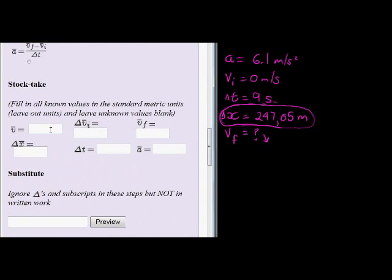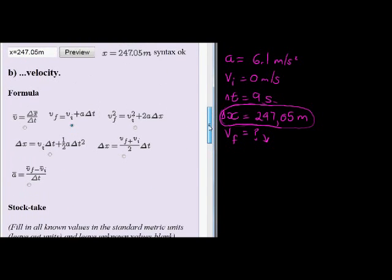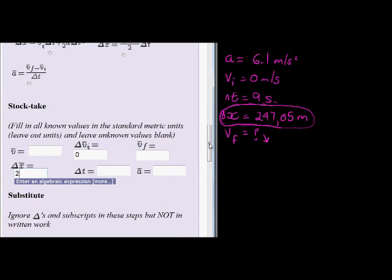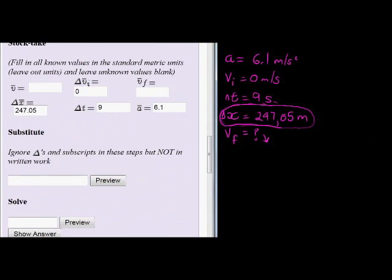Now, stock taking: we must place in all of the values that we do know. If you leave out a value that you've already calculated, your answer will be wrong. So let's put in all of the values. That would be zero. We don't have the average velocity. Do we have the future velocity? No, that's what we're trying to calculate. Delta X is 247.05, delta T is 9 seconds, and acceleration is 6.1 meters per second squared.